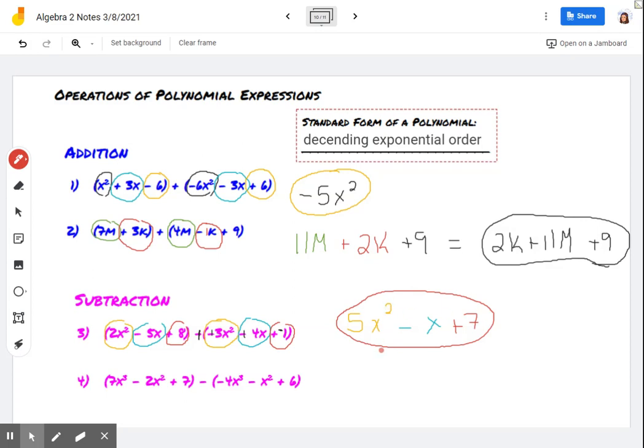So quadratic because the degree is 2. Trinomial because we have three terms. So let's do it again.